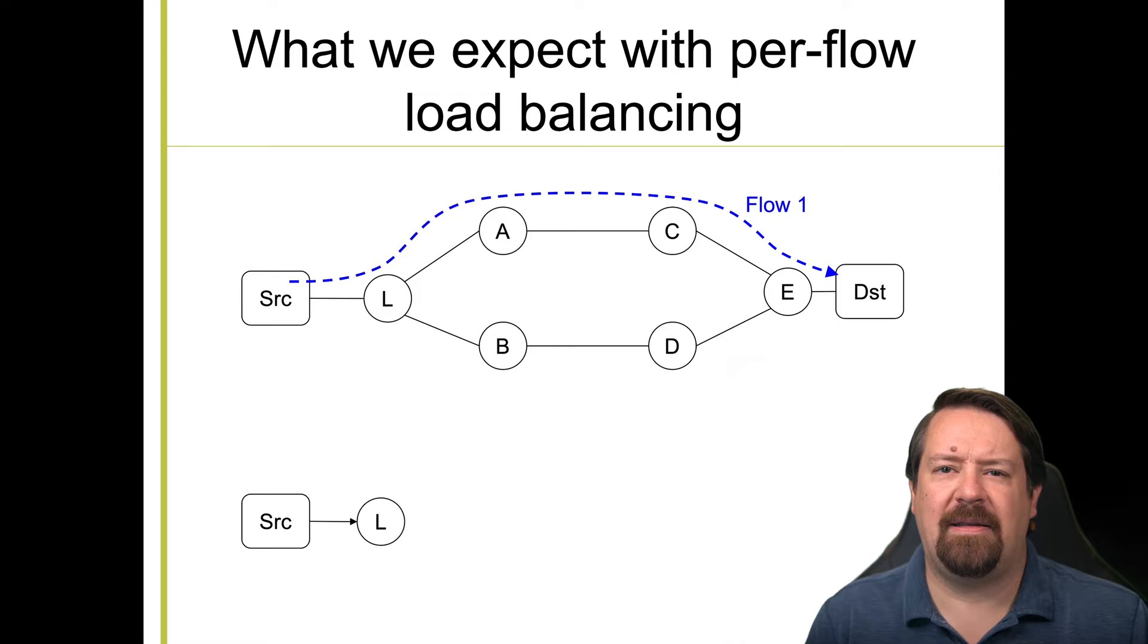So the load balancer uses a hash of the flows five tuple and divides up the hash space across the load balance legs. The alternative to this is per packet load balancing where the load balancer randomly sends packets on either leg of the load balanced path. And this is likely to result in packets arriving at E in a slightly different order than they were sent and can cause problems for TCP. So per packet load balancing is much less common in the internet than per flow load balancing.